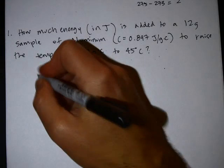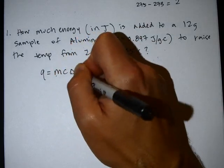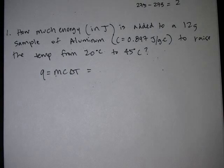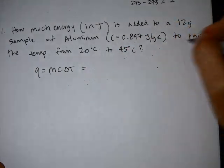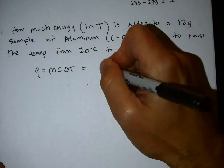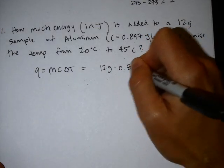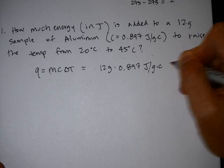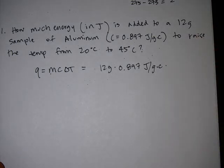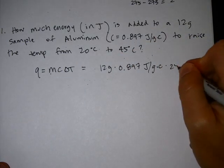So, use the equation. A lot of these are just kind of plug and chug. You write the equation down, you might need to rearrange it, and then you slam the numbers in there and bam, the answer pops out. So, Q equals MC delta T. The mass of this is 12 grams. Specific heat of aluminum, the C, is 0.897 joules per gram times Celsius. And I want to go from 20 to 45, and that difference, if you take 45 minus 20, is 25 degrees Celsius.